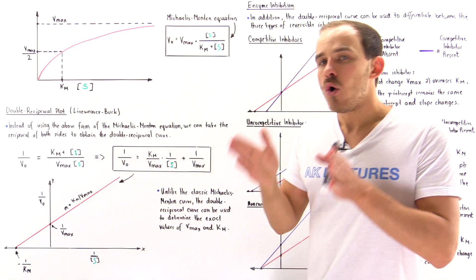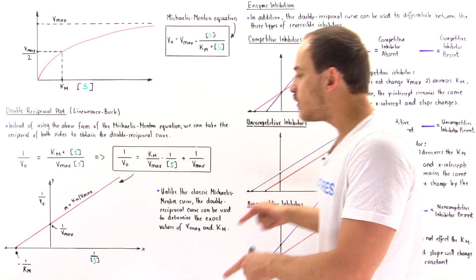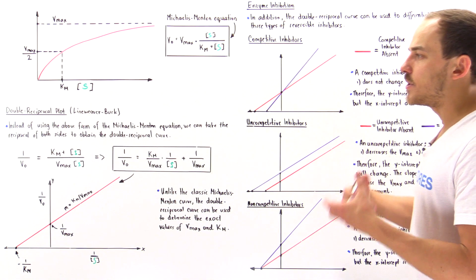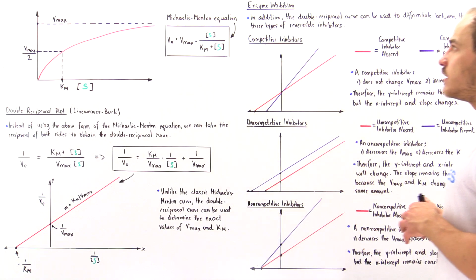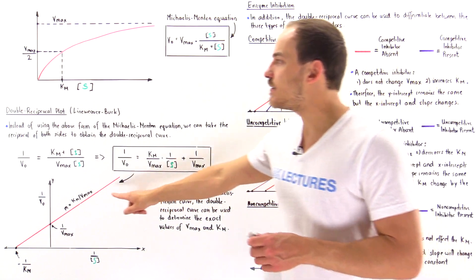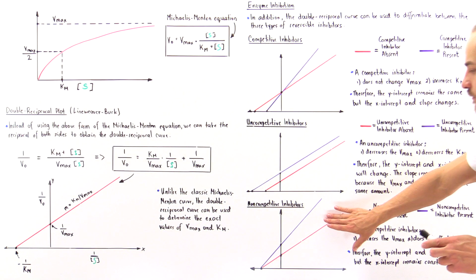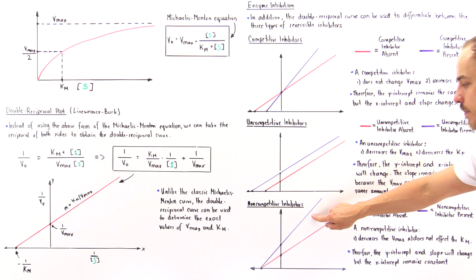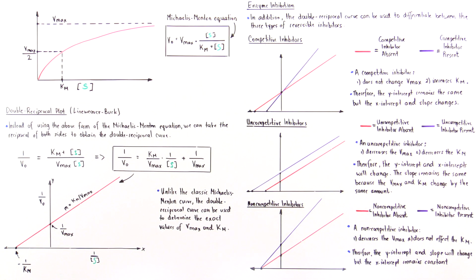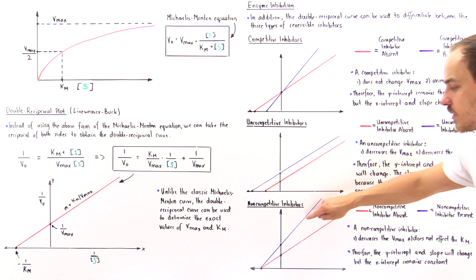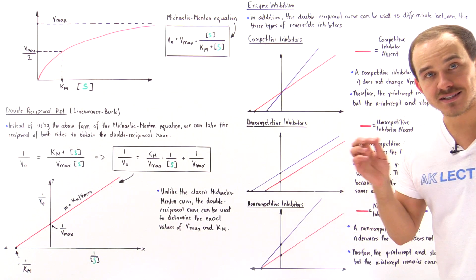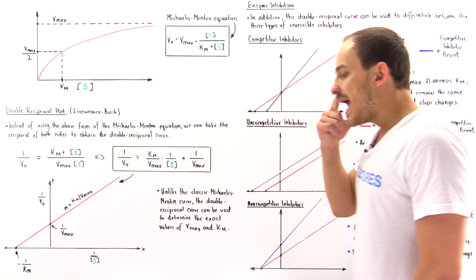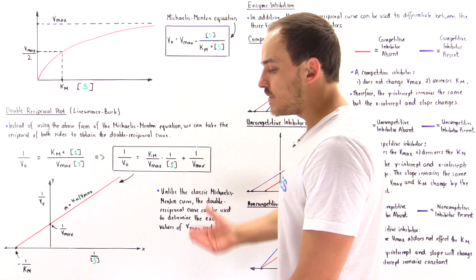Finally, let's see how a non-competitive inhibitor affects the Lineweaver-Burk curve. The red curve shows absence and the purple curve shows presence of the non-competitive inhibitor. Notice that the slopes are different — the purple line's slope is greater — the y-intercepts are different with the purple being greater, but the x-intercepts are actually the same.